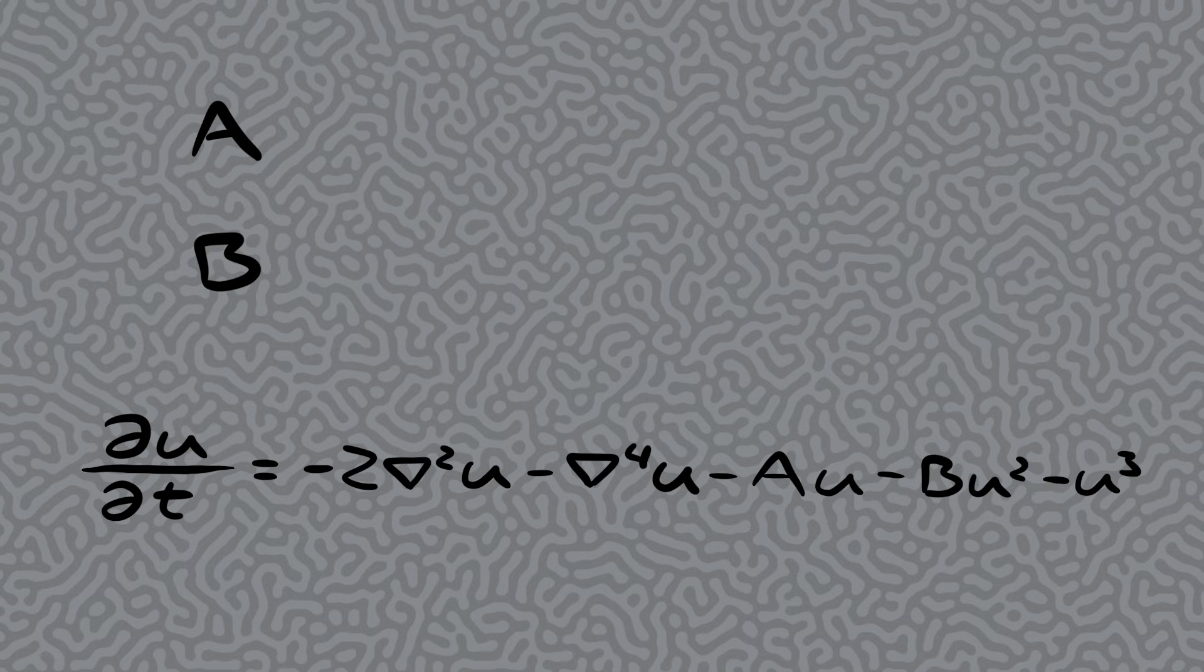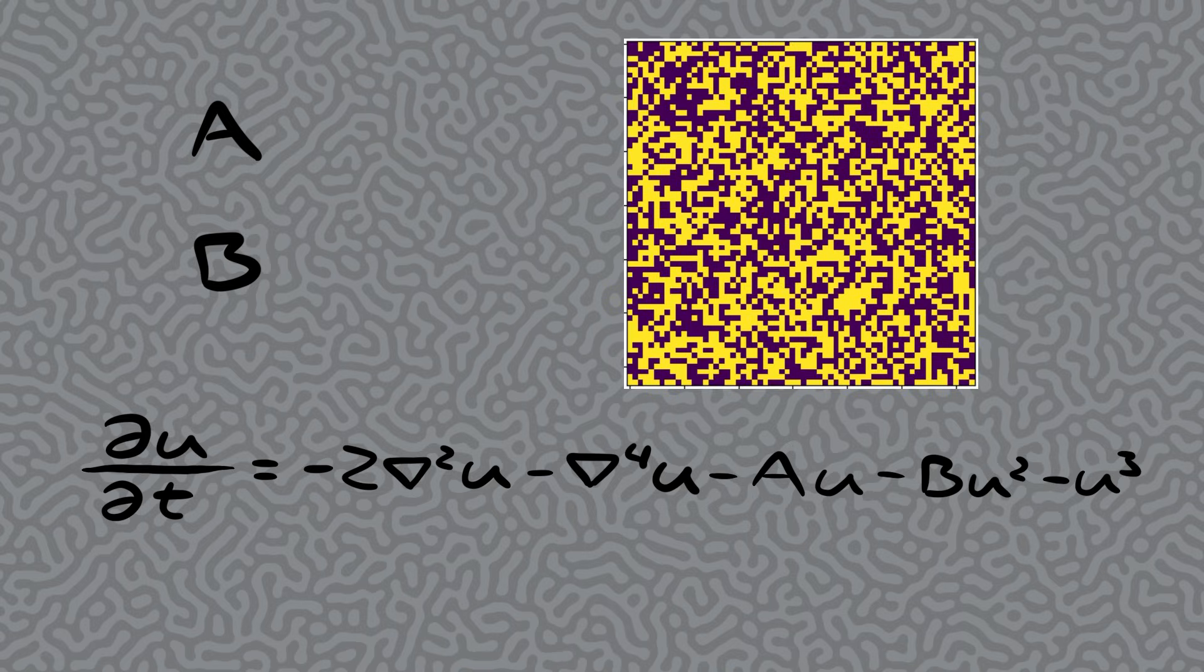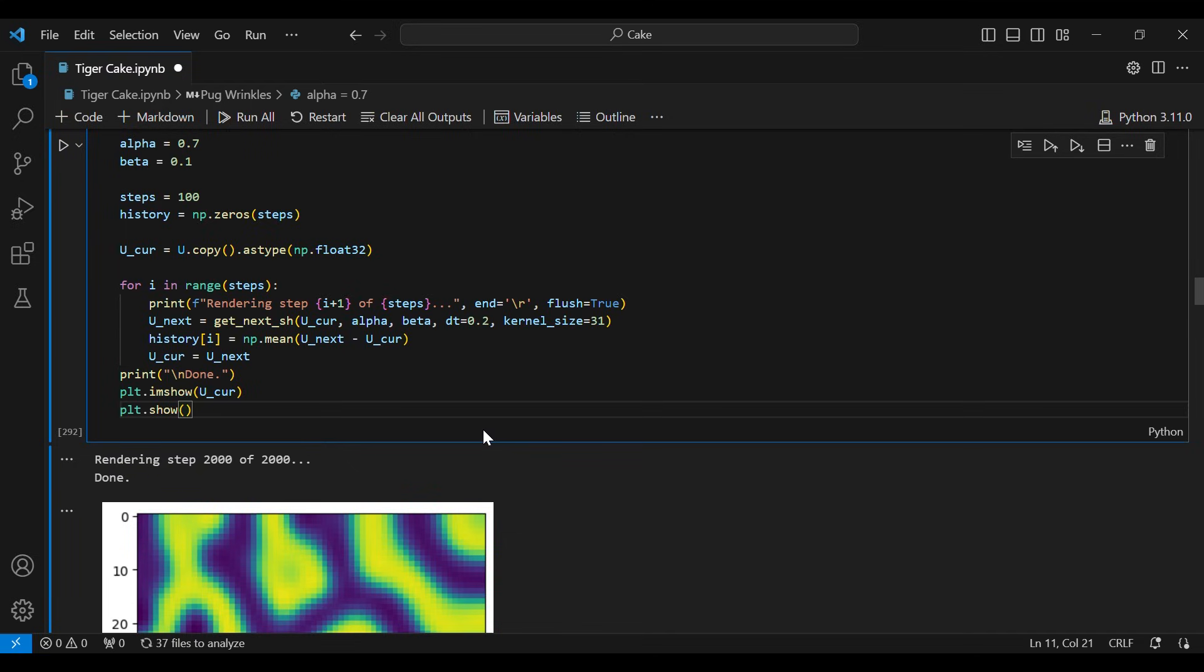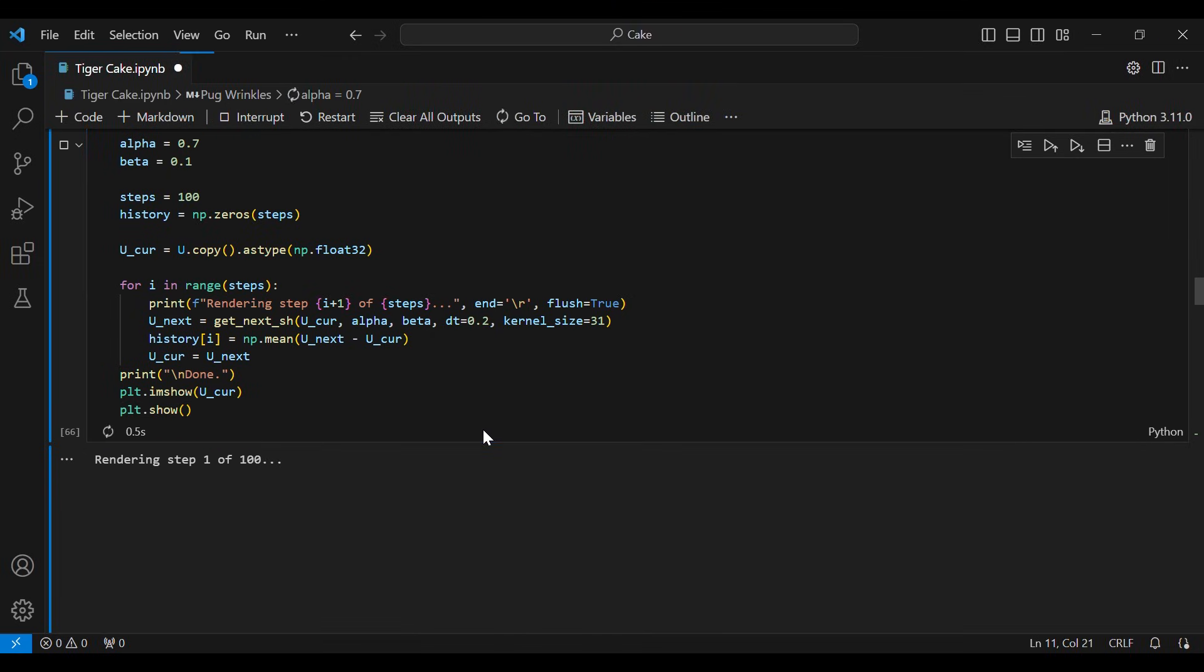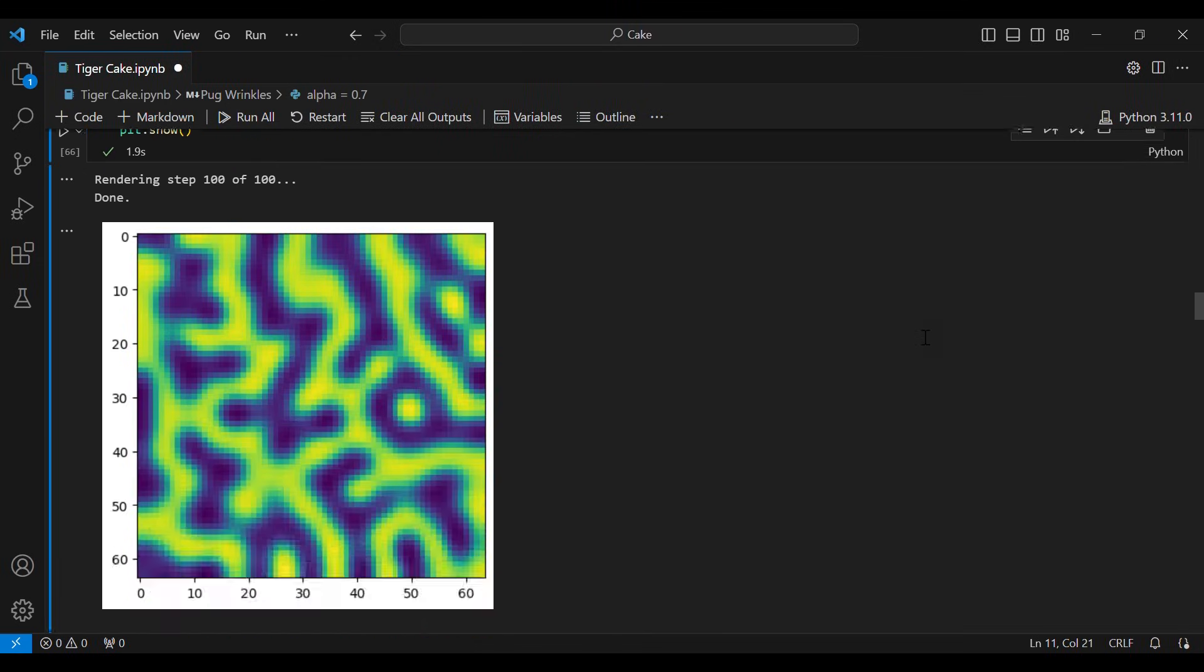The other deciding factor, of course, is the initial condition of the pug's skin. So each pug's genes will consist of three things: those two numbers and the initial pattern on its skin when it's born. To see what the pug's wrinkles will look like as an adult, we apply this equation to the initial wrinkles over and over.